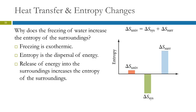Why does freezing water increase the entropy of the surroundings? Because it must. Freezing is exothermic — meaning energy is leaving the water as it freezes. Entropy is a dispersal of energy. So as the water freezes, it's releasing energy into the surroundings, and that increases the entropy of the surroundings. If entropy increasing is up: our system, the ice, is going down in entropy; the surroundings are going up in entropy; and overall, this is a slight positive change in entropy. So it is spontaneous.